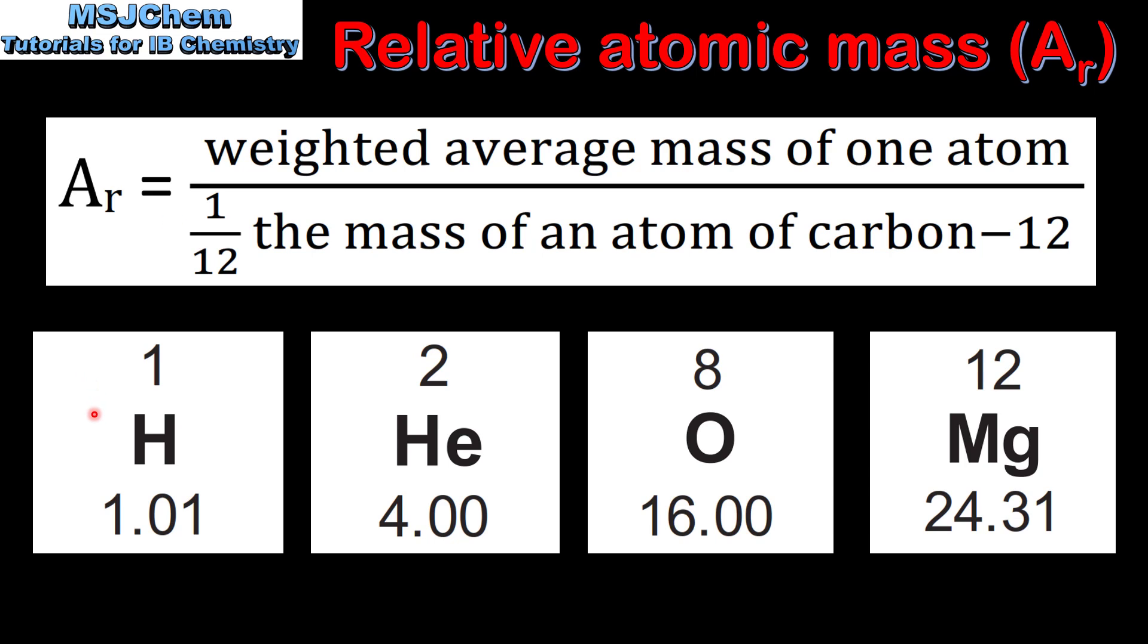Here we have some elements from the periodic table. At the top we have the atomic number, which is the number of protons in the nucleus of an atom, and at the bottom we have the relative atomic mass. As you can see, each element has its own relative atomic mass, which is the weighted average mass of one atom of that element relative to one twelfth the mass of an atom of carbon-12.